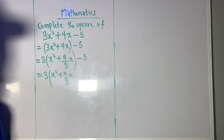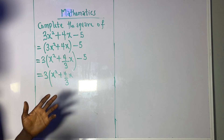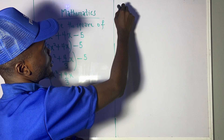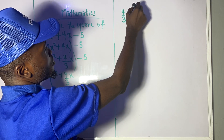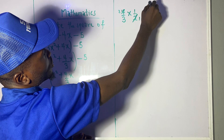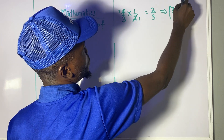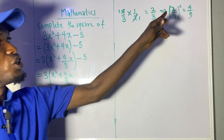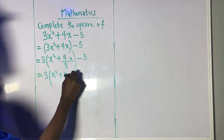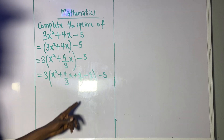We are going to add something and subtract it — just like we do with equations, except we don't have two sides here. The value to add and subtract is: take the coefficient of x, which is 4/3, multiply by half (that is, multiply by 1/2). We can reduce this to 2/3. Then we square it: (2/3)² = 4/9. So it is 4/9 that we are adding and subtracting inside the bracket: x² + 4/3 x + 4/9 − 4/9.